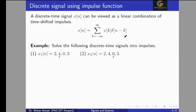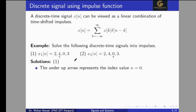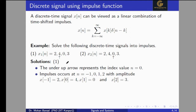Now we will solve an example where x1[n] is given as {2, 4, 0, 3}, where the up-arrow under 4 represents the index n equal to zero. The left side is the negative index and the right side is the positive index. So four is at n equal to zero, two is at n equal to minus one, zero is at n equal to one, and three is at n equal to two. This gives x(-1)=2, x(0)=4, x(1)=0, and x(2)=3.